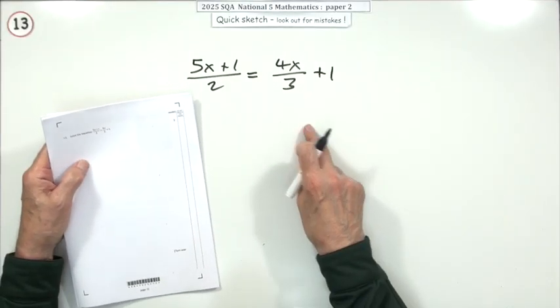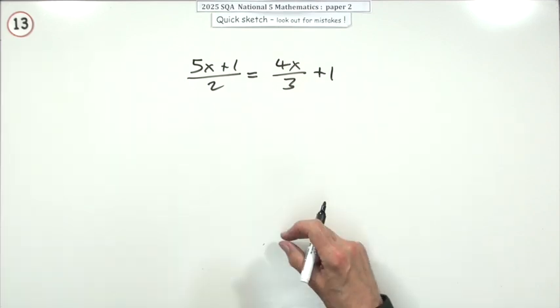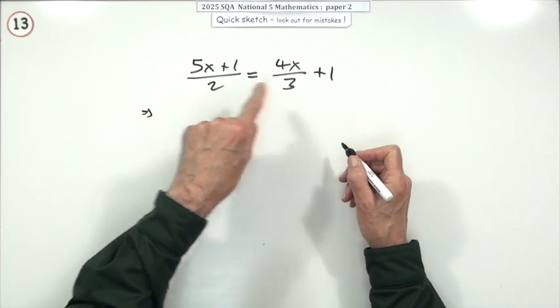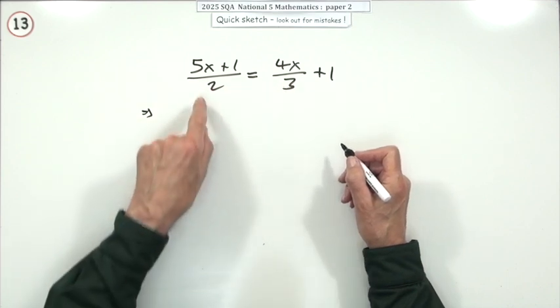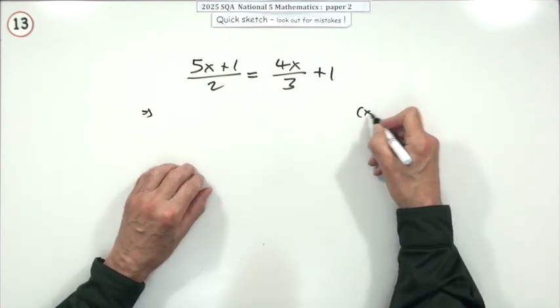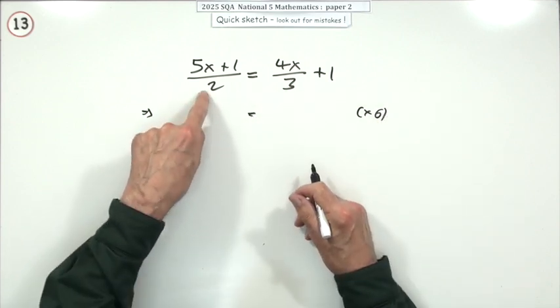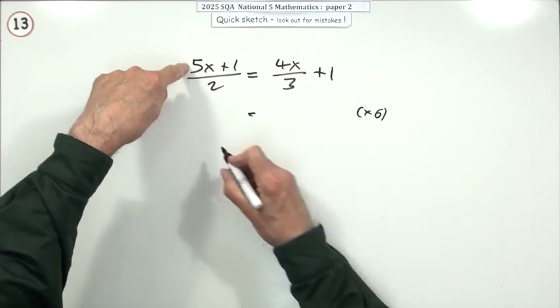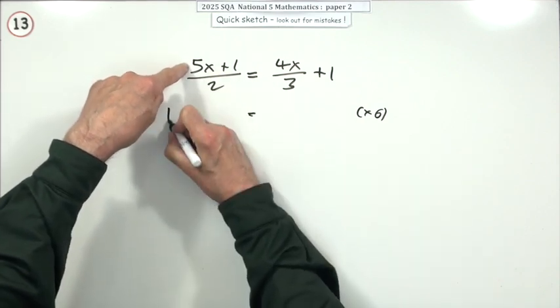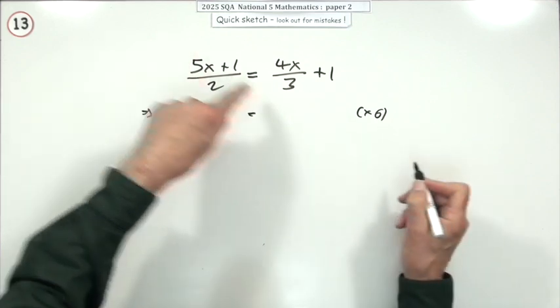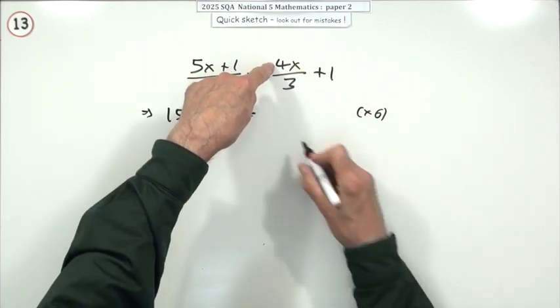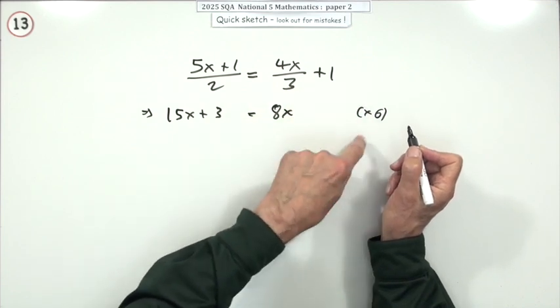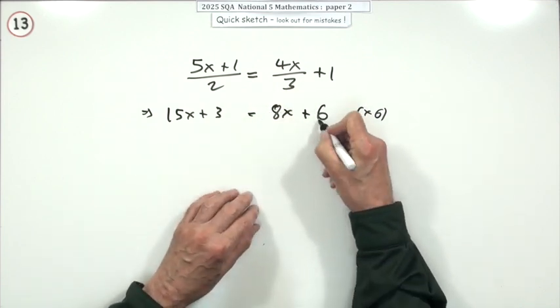Number 13. Solve this equation that's got fractions. Well, the first thing you do is get rid of fractions. What could you multiply everything by that would get rid of those awkward denominators? Something that both go into. 6. So if you multiply everything by 6, you'd end up with this. 2 into 6 goes 3, so it'll be 3 times this. I'm left with 3 times to multiply the top. 15x plus 3. 3 into 6 goes 2, so it's 2 times the top here, which is 8x, but also 6 times, because there's no denominator here. 6 times all of that, so that's plus 6.